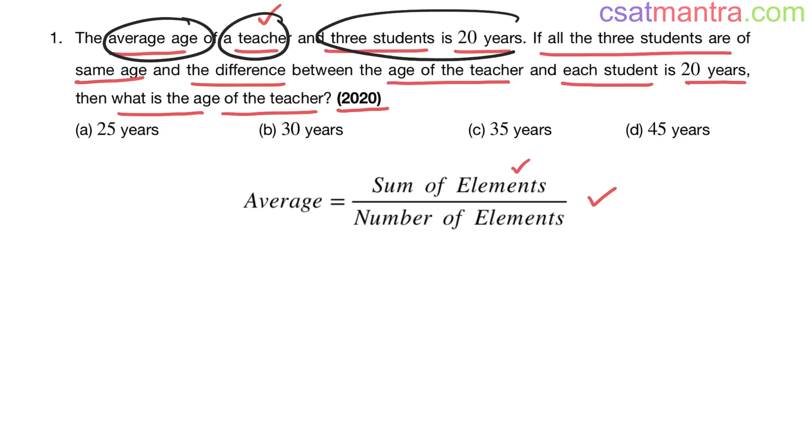So average equals sum of the ages. Teacher age plus student one plus student two plus student three, divided by number of people, that is four. So T + S1 + S2 + S3 equals 20 times 4, which is 80.